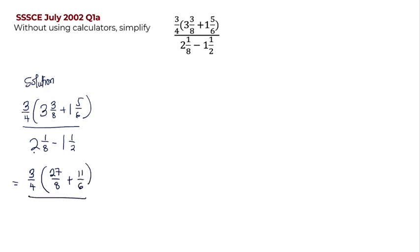All on: 2 multiplied by 8 is 16, plus 1 is 17, so we have 17 on 8. Minus 1 multiplied by 2 gives us 2, plus 1 is 3, so we have 3 on 2.